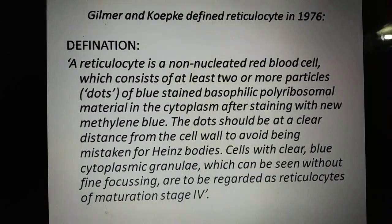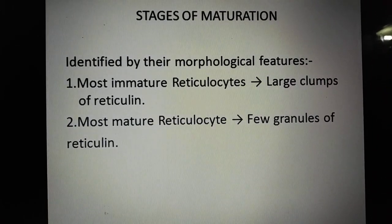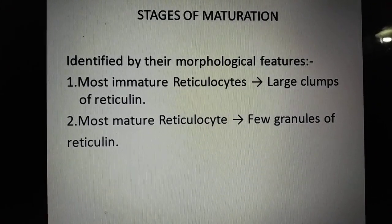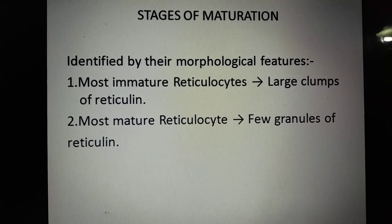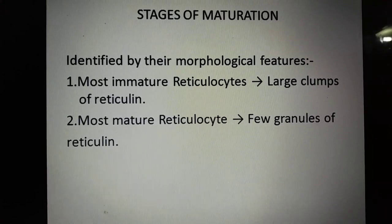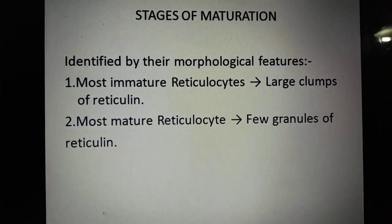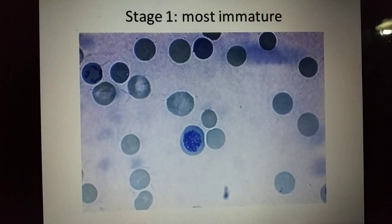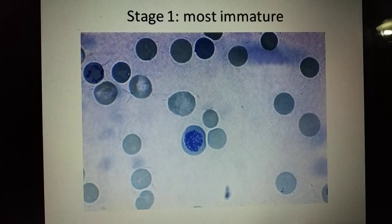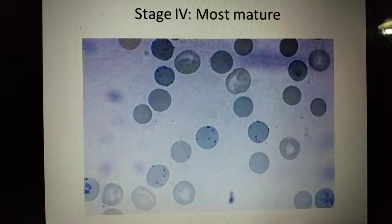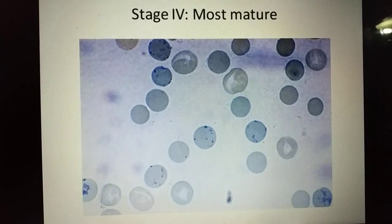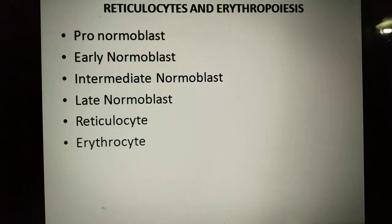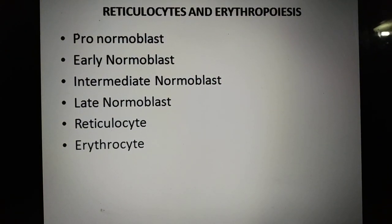Cells with clear blue cytoplasmic granules which can be seen without fine focusing are to be regarded as reticulocytes of maturation stage 4. Regarding the stages of maturation: the most immature reticulocytes, stage 1, have large clumps of reticulin, and the most mature reticulocytes, stage 4, have only few granules of reticulin. As you can see, stage 1 shows large clumps while the stage 4 image shows only a few blue dots.